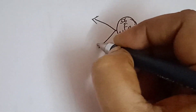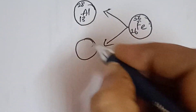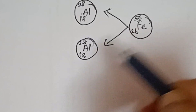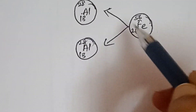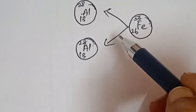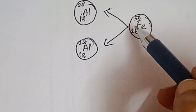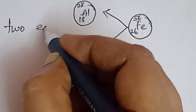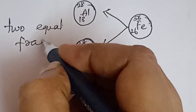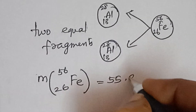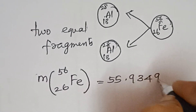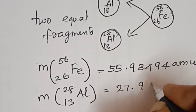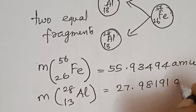Fe-56 splits into 2 equal fragments of Al-13 (A=28). Checking the numbers: 13 times 2 equals 26, and 28 times 2 equals 56 — so the fragment numbers balance. Mass of Fe-56 is 55.93494 AMU, and mass of aluminium Al-28 is 27.9819 AMU.